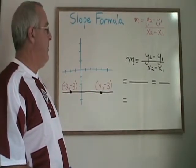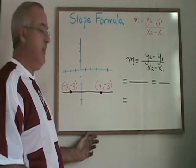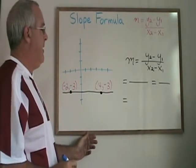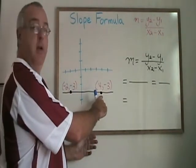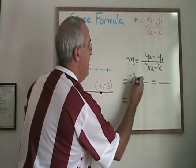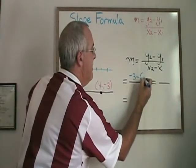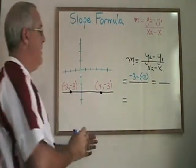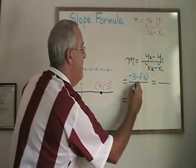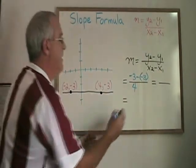What happens if we have a horizontal line like we do in this example? If I call this point 2, my y2 is negative 3 minus my y1, which is also a negative 3. x2 is 4 minus x1, which is negative 2.